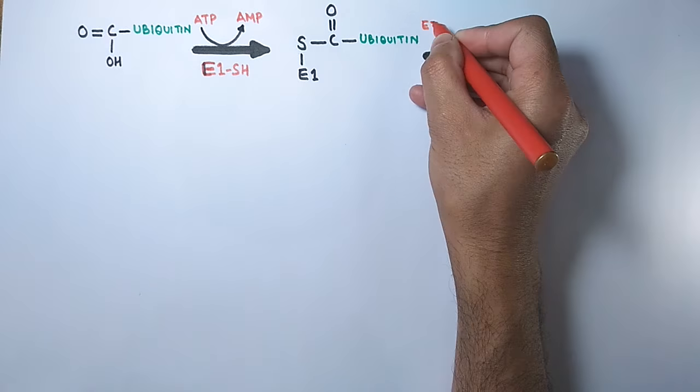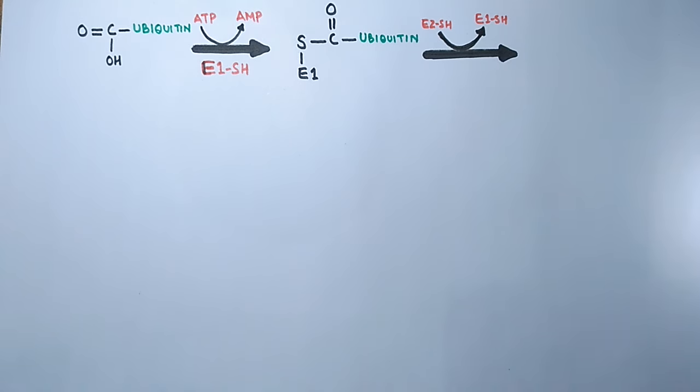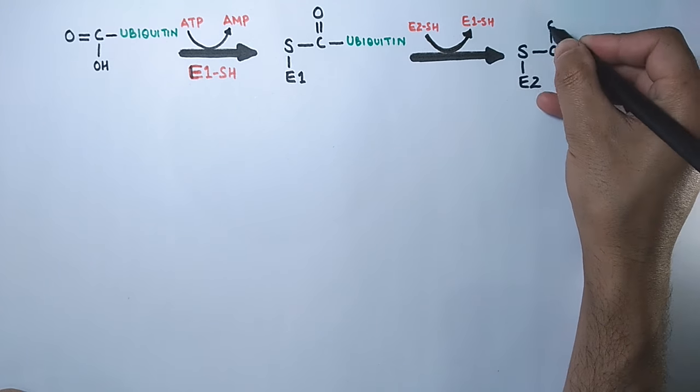Then E2 enzyme comes in and transfers the activated ubiquitin from E1 towards the cysteine residue of E2 enzyme.